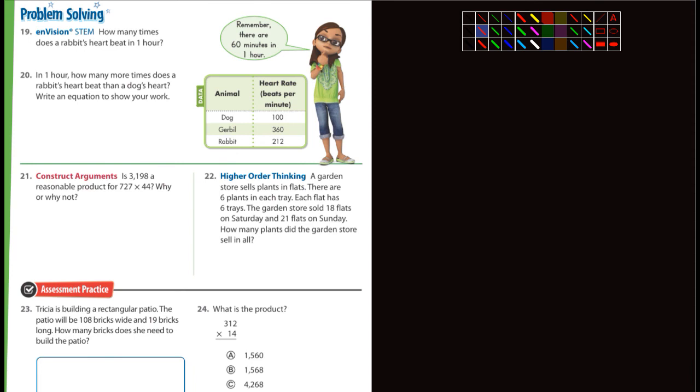Number 19, how many times does a rabbit's heart beat in one hour? This is per minute. So this is per minute. How many minutes are in an hour? There's 60. So if a rabbit does 212 beats in a minute, whew that's fast, in an hour it's going to be 60 times that. So it's going to be 212 times 60.